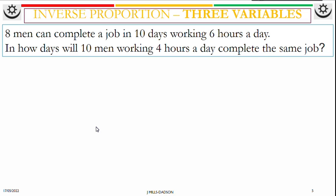Now let's look at where we have inverse proportion for three variables. Eight men can complete a job in 10 days working six hours a day. In how many days will 10 men working four hours a day complete the same job?